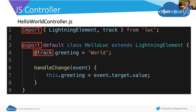We have our greeting variable, which is @tracked, and we're setting it to a default value of 'world'. Our handleChange method is defined on line six — it captures the event of me changing the input. Then in line seven, we're taking whatever value within the thing that fired the event and assigning it to the greeting variable. So basically, whatever I'm typing becomes the greeting variable, and because it's @tracked, it's automatically re-rendering itself in the UI. Pretty cool — no Apex needed at all.